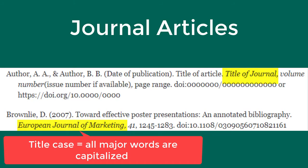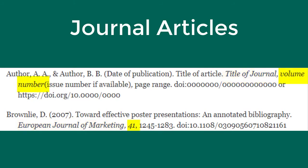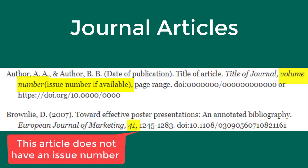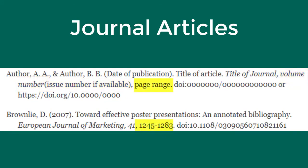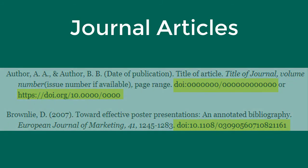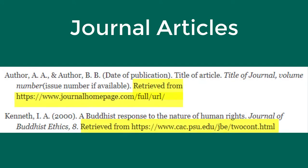Then in parentheses and non-italics is the issue number, comma, page range, and the DOI. If your article has no DOI, include the words 'retrieved from' and the URL of the journal homepage.